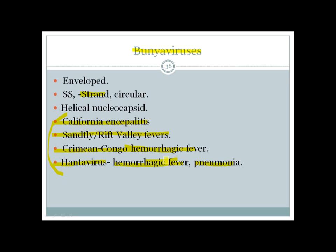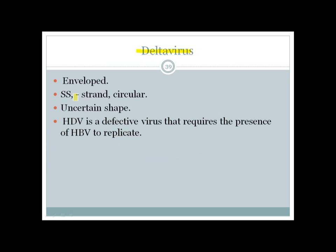Delta virus is also a negative-strand virus with an uncertain shape. Importantly, it is a defective virus that requires the presence of Hepatitis B virus to replicate — it needs HBsAg from HBV to complete its replication cycle. That concludes today's discussion of RNA viruses, with more presentations on HIV and Hepatitis B coming soon.